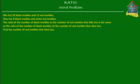Welcome to homecampus.com.sg. Let's solve this word problem. Mia has 20 black marbles and 15 red marbles. Alex has 8 black marbles and some red marbles. The ratio of the number of black marbles to the number of red marbles that Mia has is the same as the ratio of the number of black marbles to the number of red marbles that Alex has. Find the number of red marbles that Alex has.